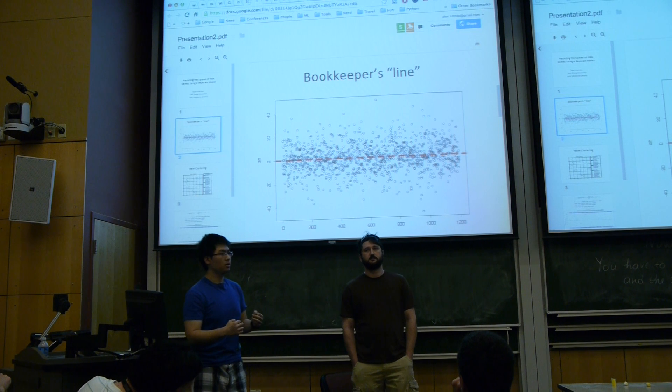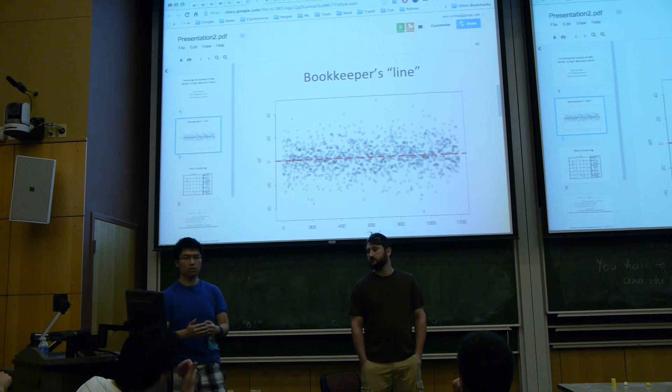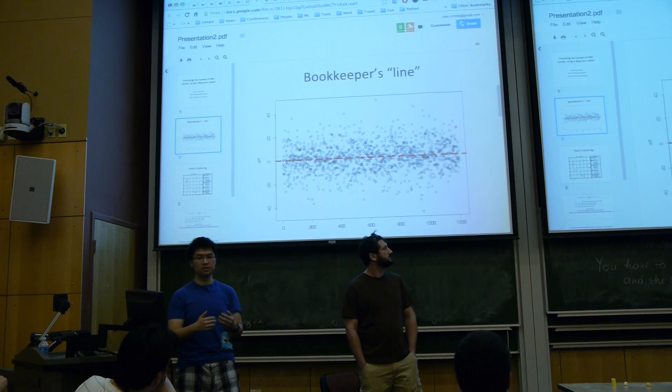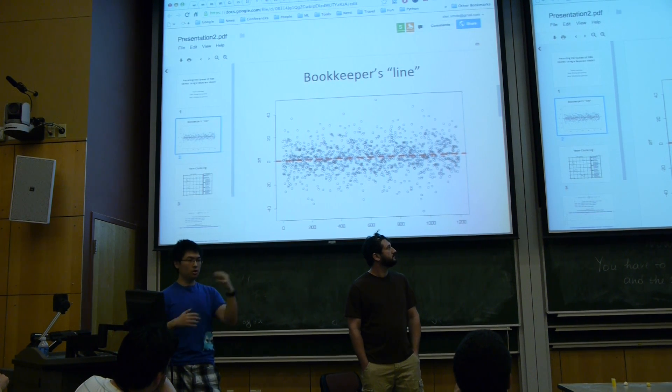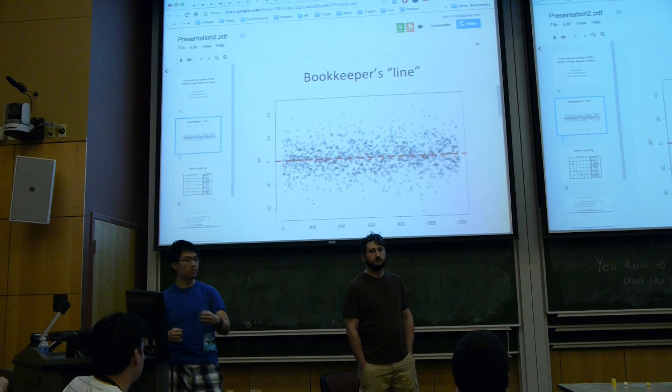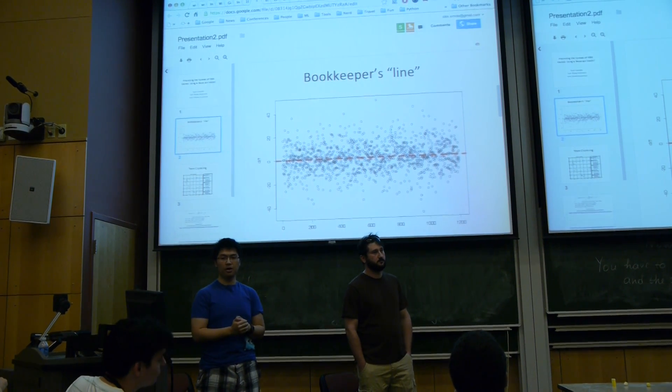So for classifier selection, we choose Naive Bayes model because first, our data is relatively small. We only use one season for our training data because the teams perform differently from season to season. And that's about 1,200 games.